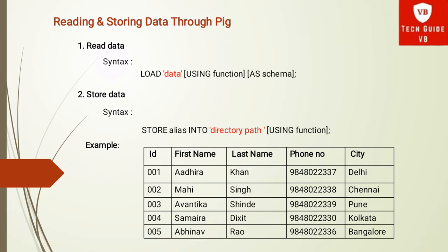Then in square brackets there is 'USING function' — USING is a keyword and function is a load function. You can also use a built-in function; PigStorage is the default load function. Then in the second square brackets there is 'AS schema' — AS is a keyword and schema specifies the type of data the loader will produce. If the schema is not confirmed, either an error is generated or there is a null value.